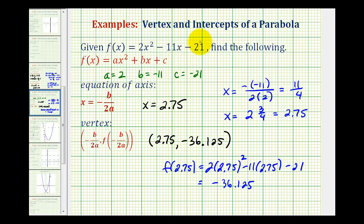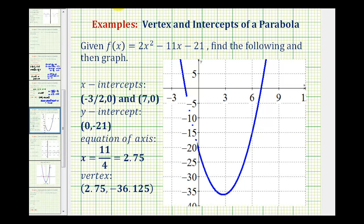So let's go ahead and put all these pieces together and take a look at the graph. To save some time, I've already graphed this using graphing software. But notice how we have an x-intercept here of negative 3 halves, or negative 1.5, as well as positive 7. We have a y-intercept of negative 21 here.